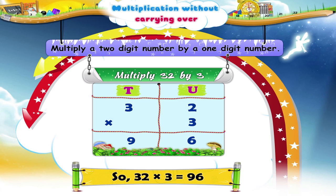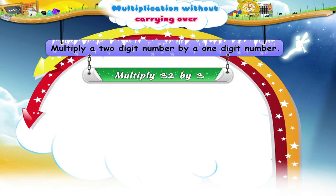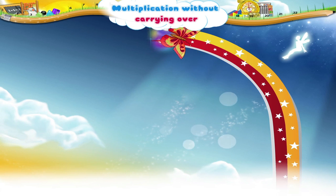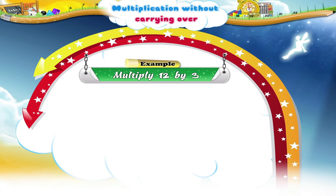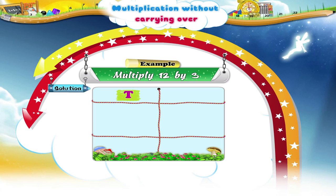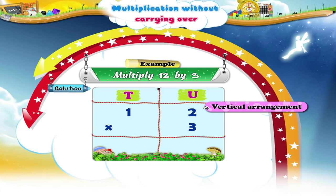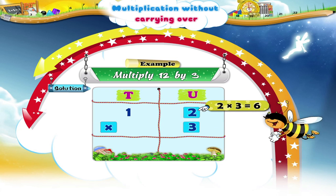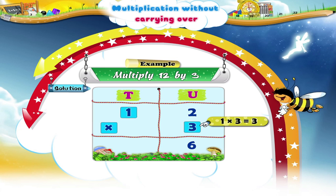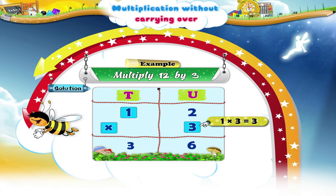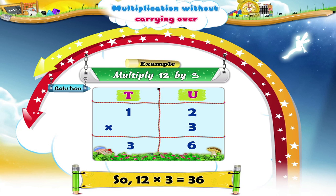Now let us revise what we have learned by completing the following exercises on multiplication. Multiply 12 by 3. 2 threes are 6. 1 three is 3. The product is 36.